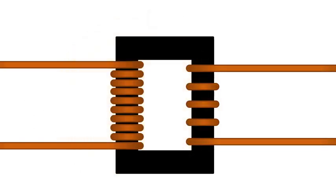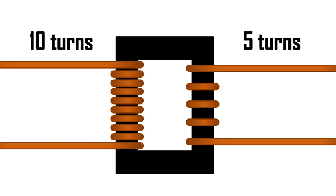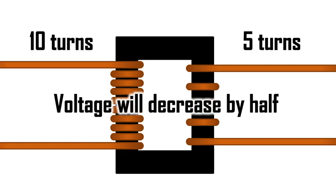The number of turns on the primary and secondary side determine whether the voltage is stepped up or stepped down. In this example, the primary side has 10 turns and the secondary side has 5 turns. There are half as many turns on the secondary side, so the voltage will decrease by half. This is a step-down transformer because the voltage is decreased.